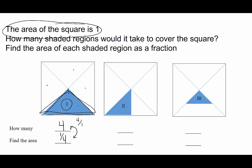Number 2, how many triangles the size of region 2 would it take to cover the square? It would take 8 of them. That means the value of region 2 is 1 eighth.